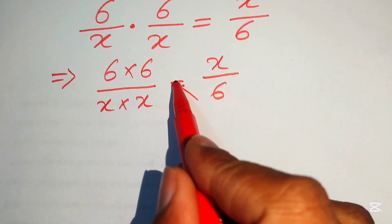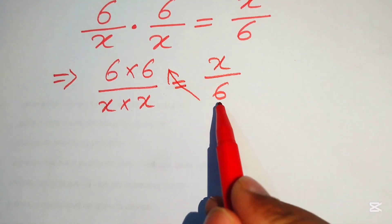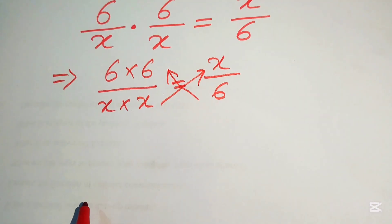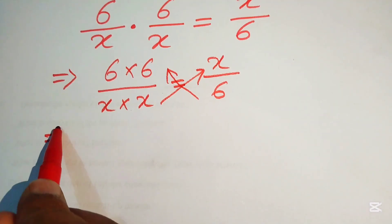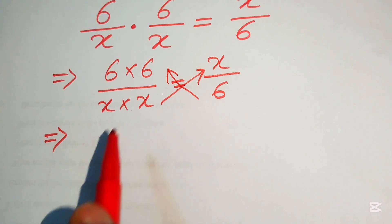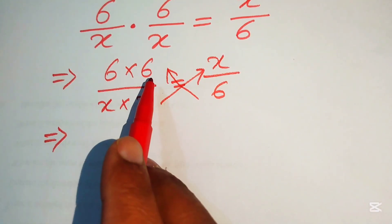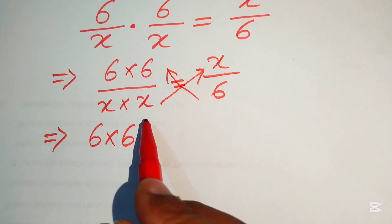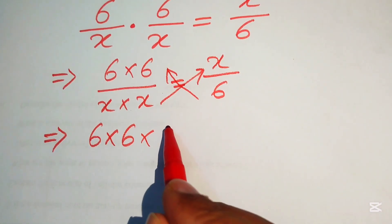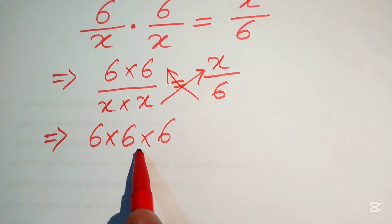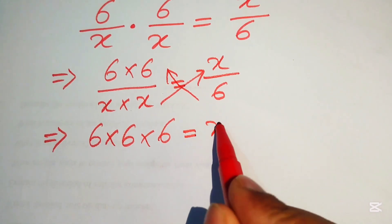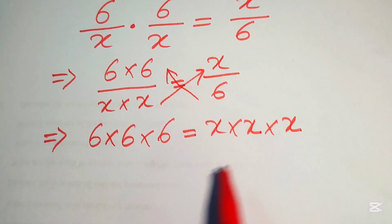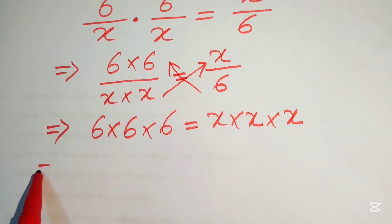We cross-multiply the terms, moving the 6 to the left-hand side and multiplying x terms on the right-hand side. This gives us 6 times 6 times 6 equals x times x times x.